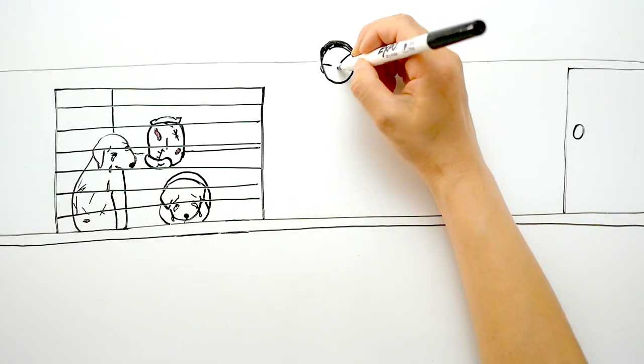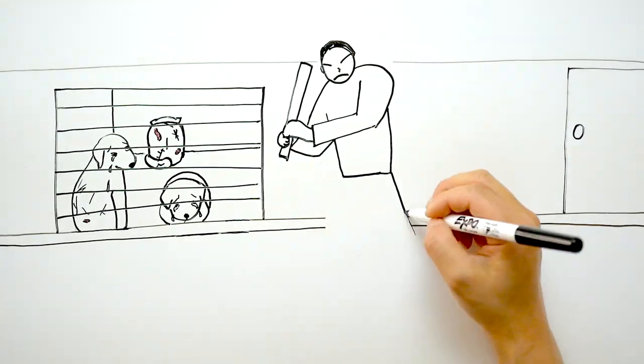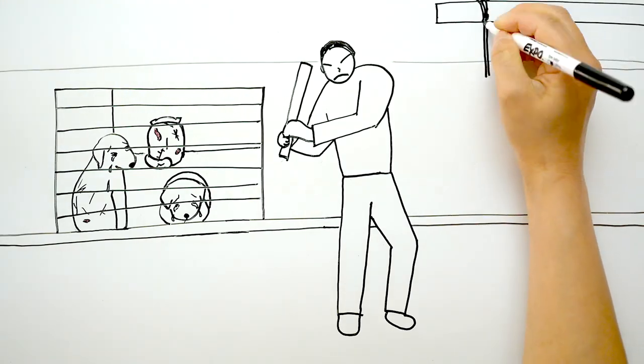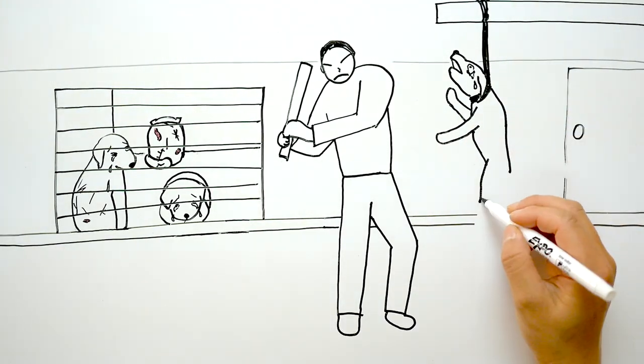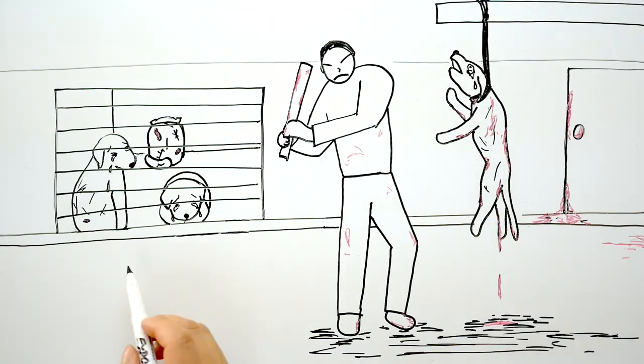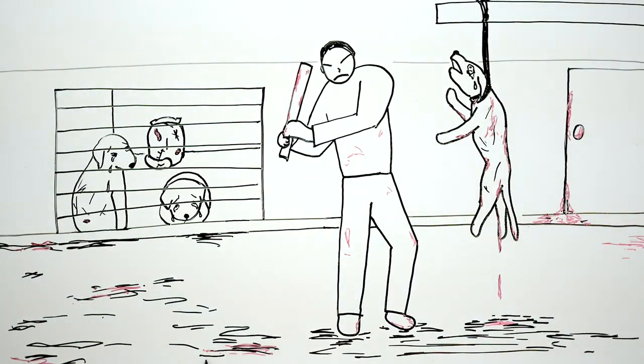Then, I watched from inside my cage as the men grabbed dogs and hung them up, beat them, and killed them. I closed my eyes as I saw my brother hung up and beaten with a pipe. I wanted to help him, but I could barely even move.